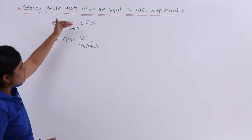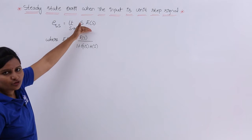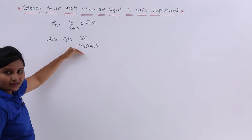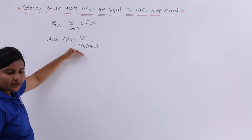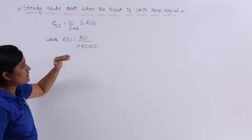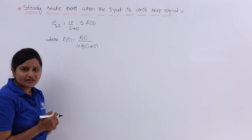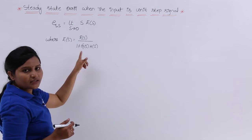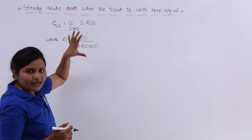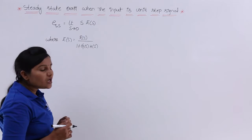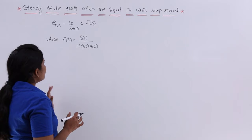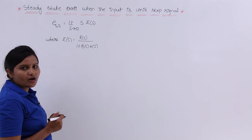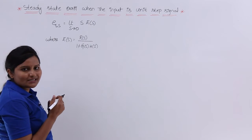The steady state error, according to the final value theorem, can be written using these two equations: ESS = limit s→0 of s·E(s), and the error transform E(s) = R(s) / [1 + G(s)·H(s)]. You can refer to the previous video on steady state error for more detail on these two equations. Now we have these equations in hand and need to find the steady state error.